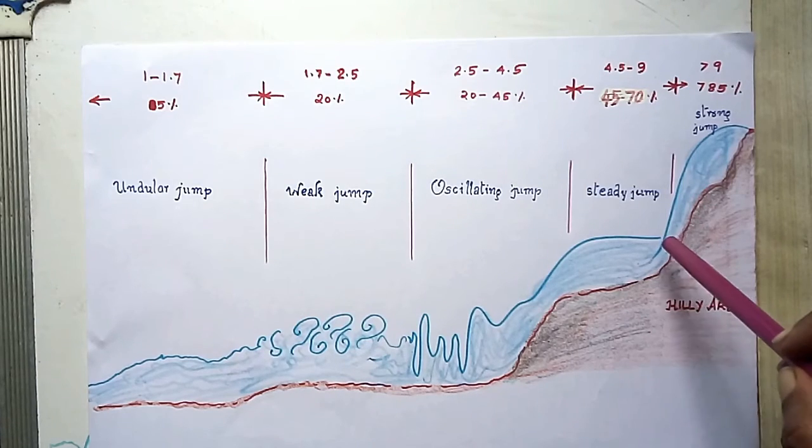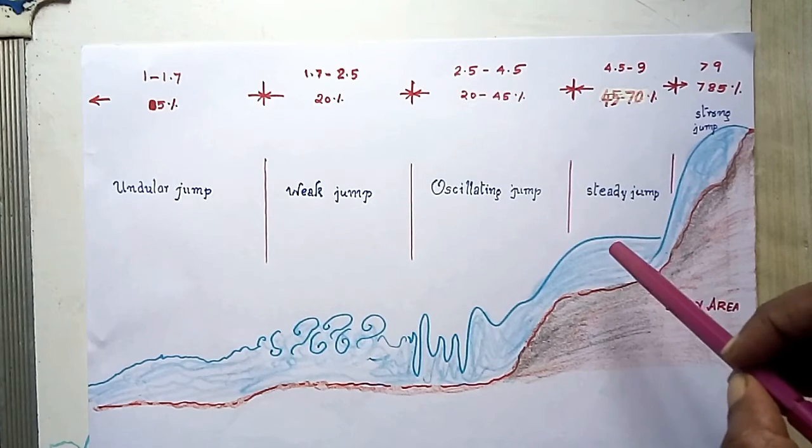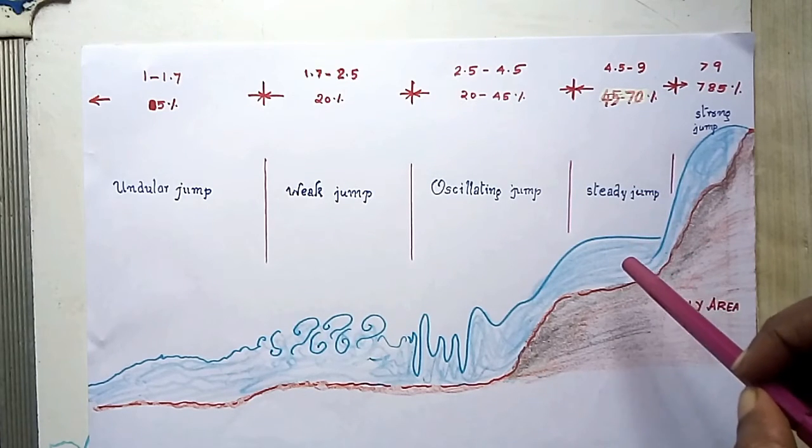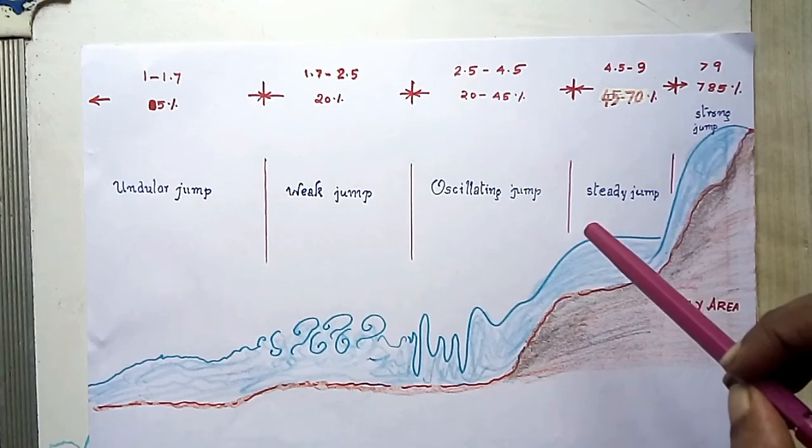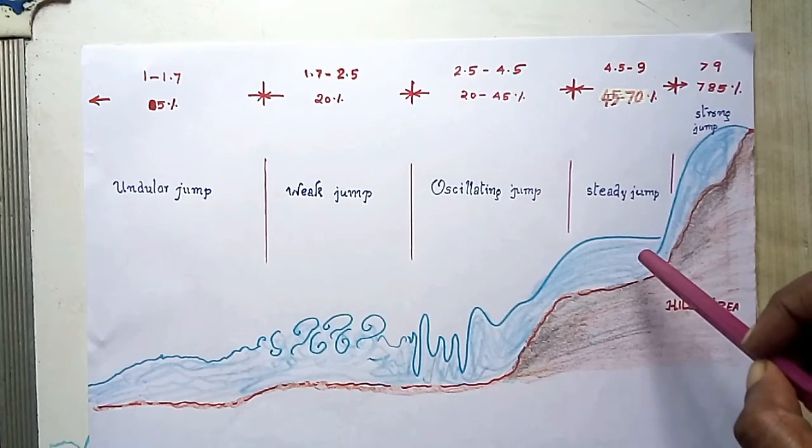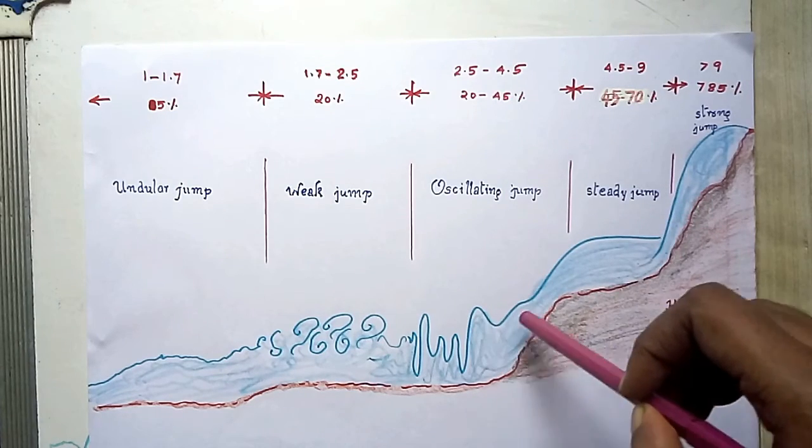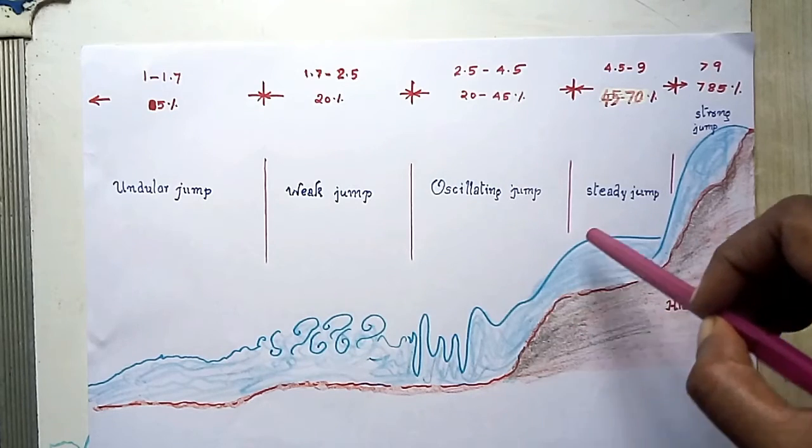After that, a stable and well-balanced jump is developed. The action and position of this jump are least sensitive to variation in tail water depth. This jump has the best performance. The energy dissipation ranges from 45 to 70%. This jump is called a steady jump. The Froude number ranges here from 4.5 to 9.